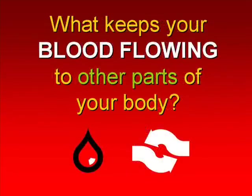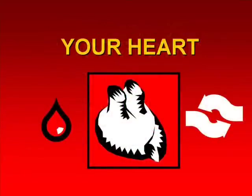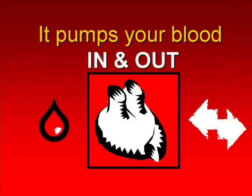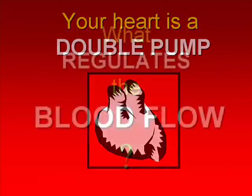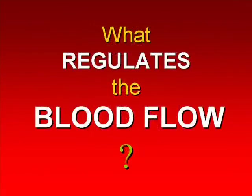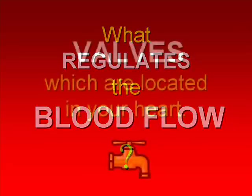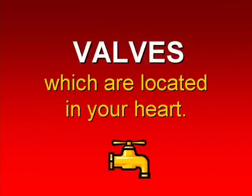What keeps your blood flowing to other parts of your body? Your heart. It pumps your blood in and out. Your heart is a double pump. What regulates the blood flow? Valves, which are located in your heart.